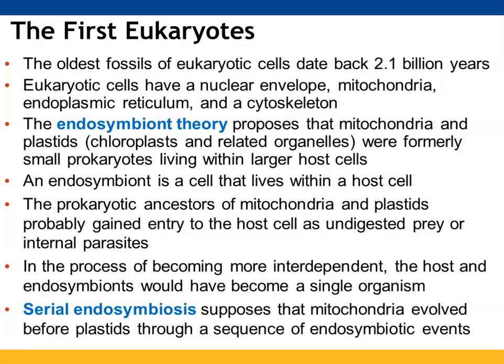The endosymbiont theory proposes that mitochondria and plastids such as chloroplasts were initially small prokaryotes coexisting within larger host cells — an endosymbiont is a cell that lives within a host cell. The prokaryotic ancestors of mitochondria and plastids most likely gained entry to host cells as undigested prey or internal parasites. As they became more interdependent, the hosts and endosymbionts became one organism. Serial endosymbiosis suggests that mitochondria evolved before plastids as a result of multiple endosymbiotic events.